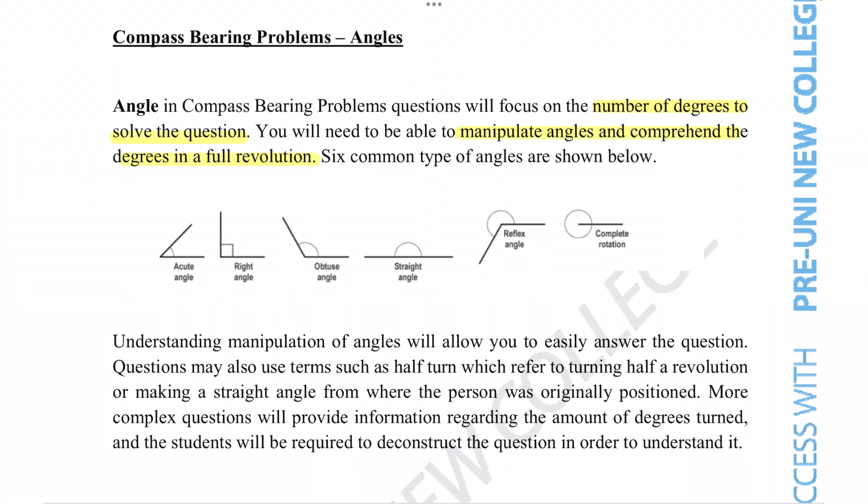Understanding manipulation of angles will allow us to easily answer the question. Questions may also use terms such as half turn, which refer to half a revolution, or making a straight angle from where the person was originally positioned. More complex questions could provide information regarding the amount of degrees turned, and we'll need to deconstruct the question in order to understand it.